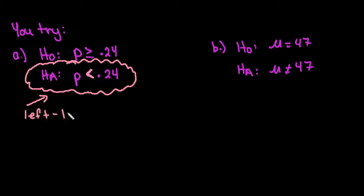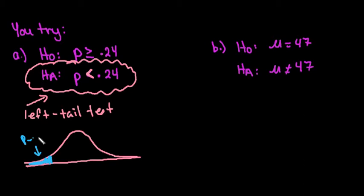we would use a left-tailed test, which means that when I draw my normal curve—because we always use normal curves for p—I am going to shade the left tail.